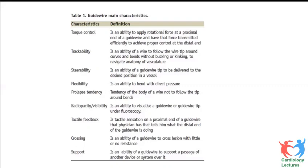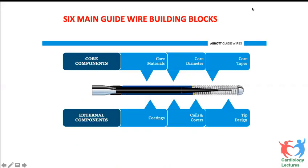Please spend time understanding where the wires on your shelf fall in terms of steerability, torque control, and prolapse tendency so you can choose correctly. A guidewire has six components — three core and three external. The core is the inner part of the guidewire, and the core material is important.